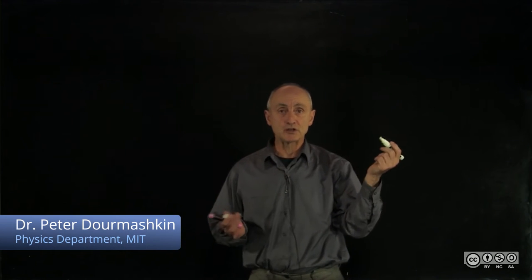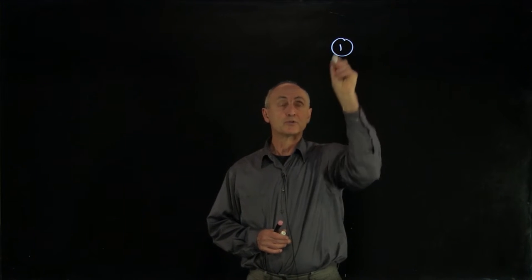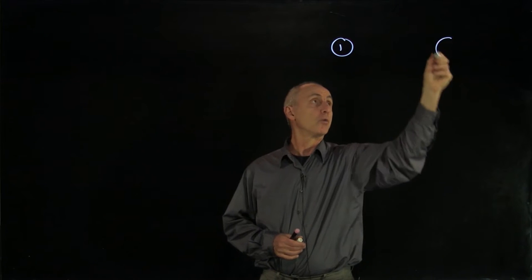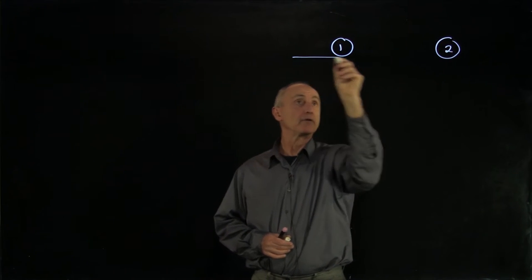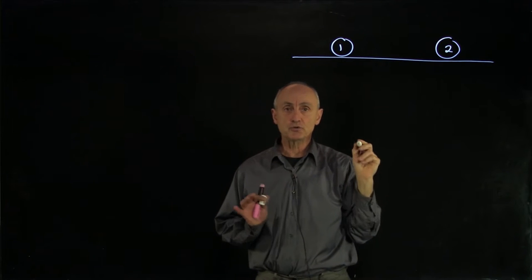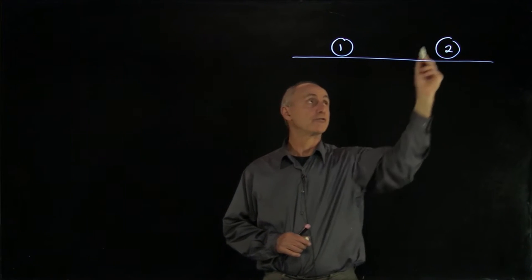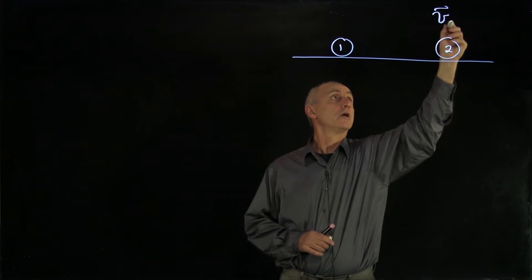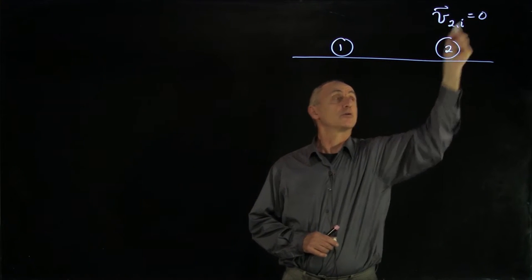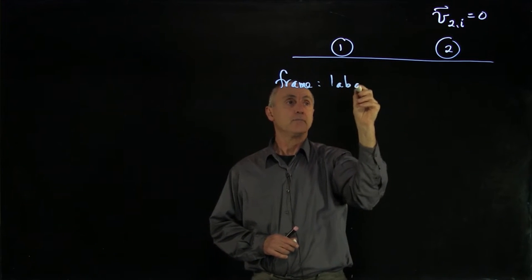Let's look at some examples of one-dimensional elastic collisions with no external forces between two particles. Suppose I have particle 1 and particle 2 moving on a frictionless surface. Let's choose a reference frame, which we'll call the laboratory frame, in which the initial velocity of particle 2 is 0.